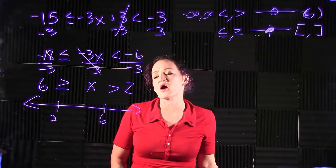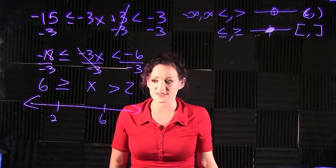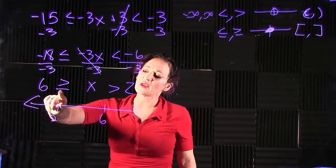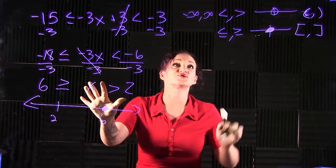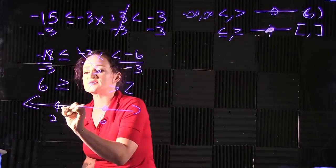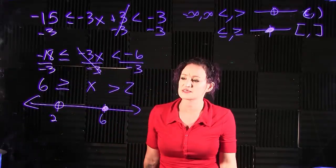When we take a look at what we have here, our solutions are between 2 and 6. If we look at the 6, we have the equal to symbol attached to it, so that does mean solid dot on 6. By the 2, we do not have that symbol, so it is an open dot on 2.